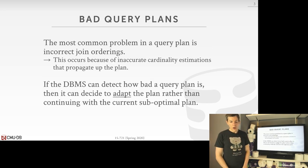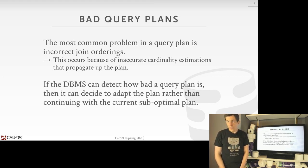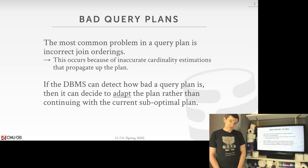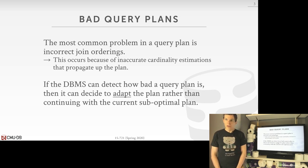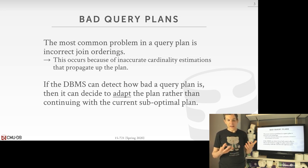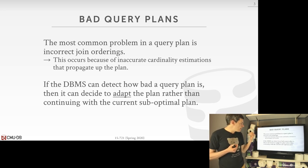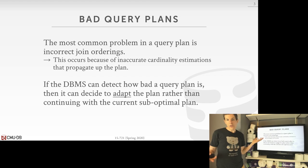We'll cover cost models more on Wednesday, but at a high level, the biggest problem we're always going to have is getting join orders incorrect. Joins are almost always the most expensive thing we execute in an analytical workload, and if we get the ordering incorrect, that can lead to poor performance.